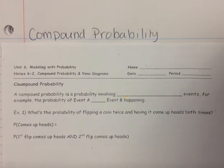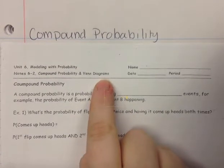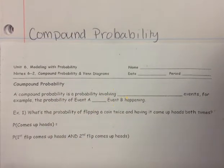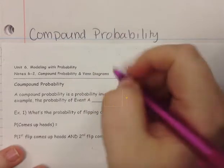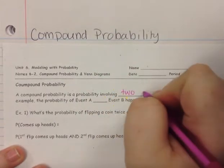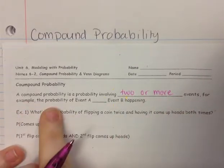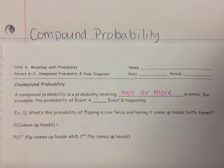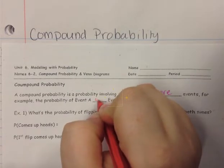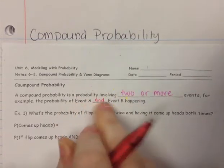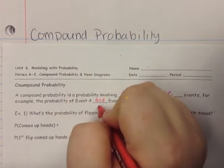This video is on compound probability and Venn diagrams. Compound probability is a probability involving two or more events. For example, the probability of event A and event B happening. When you're dealing with event A and event B, this is when we're talking about the intersection.